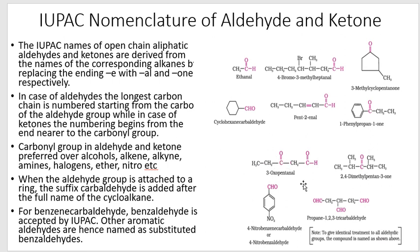When the C=O (aldehyde) group has to be treated as a secondary functional group because another preferred group is present, the aldehyde C=O is included in the parent chain and named accordingly as a secondary group.